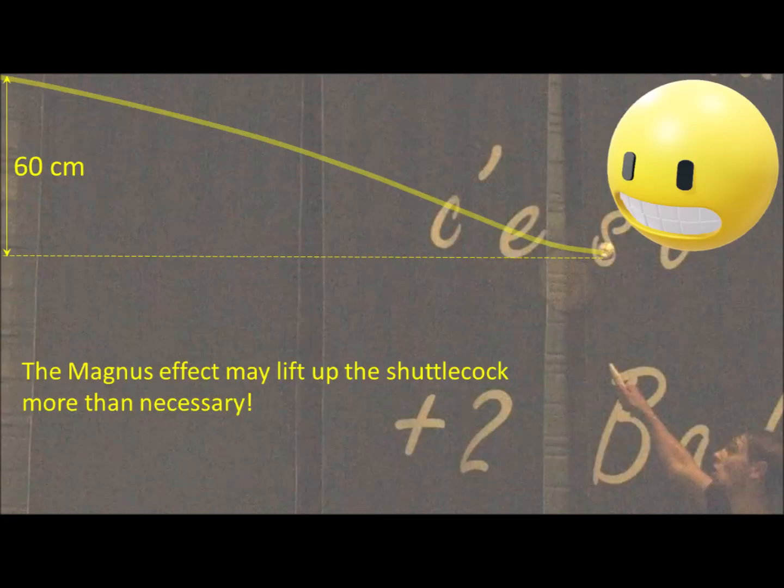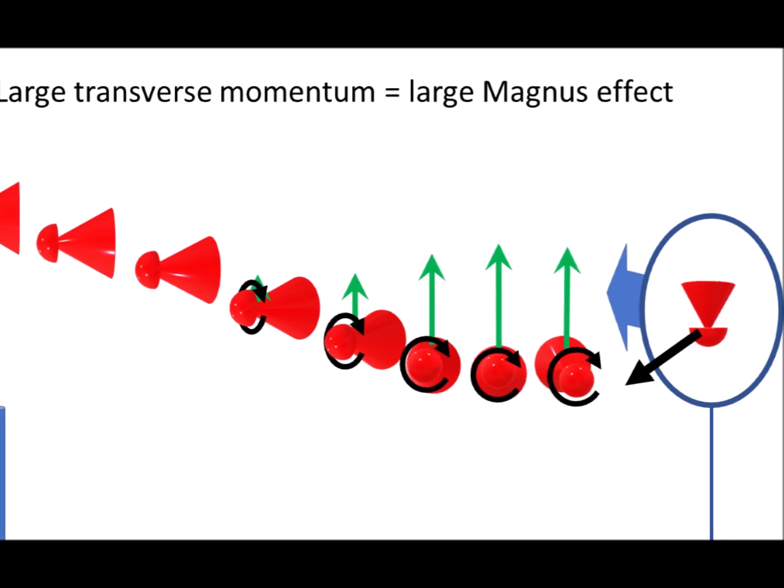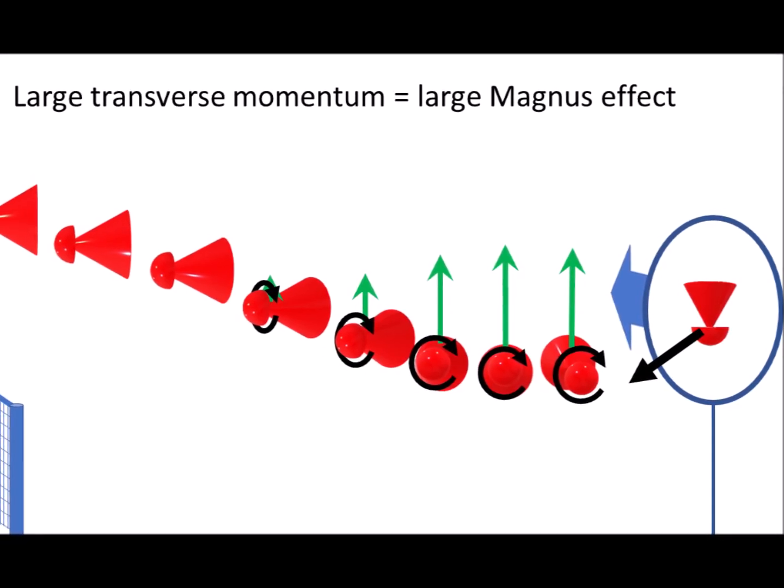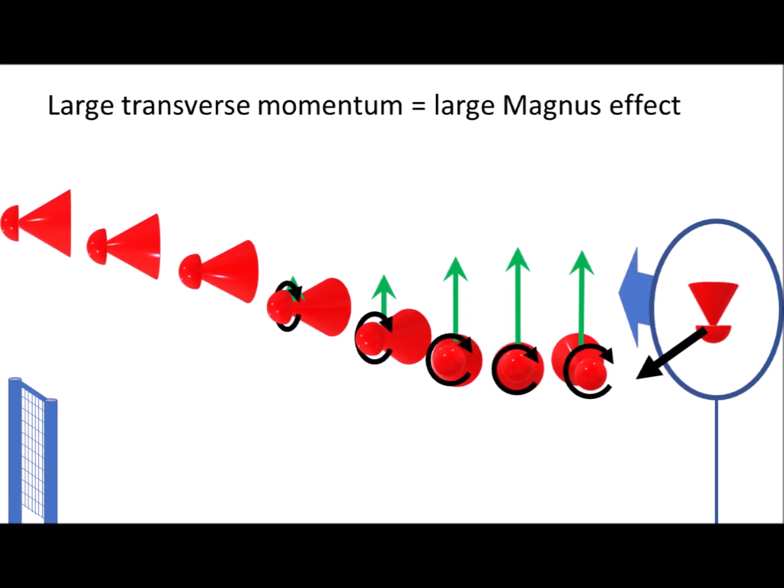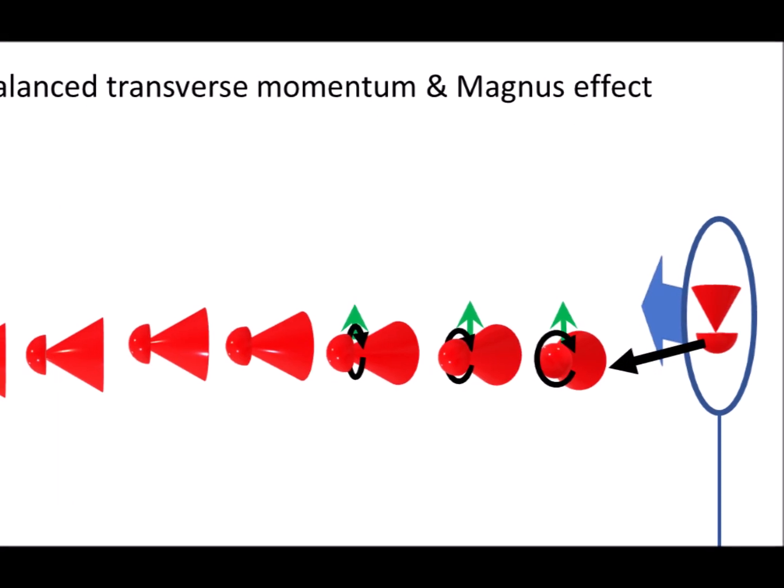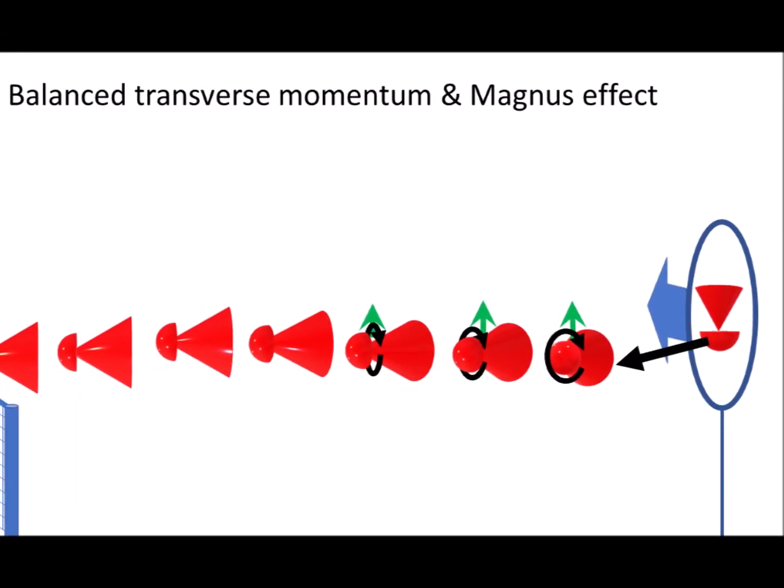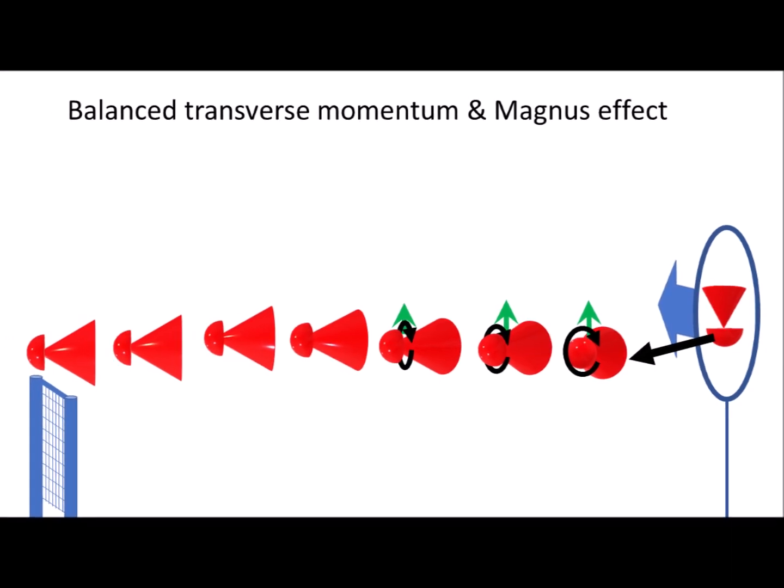Players should take care. Too much Magnus effect can reduce the effectiveness of the slice shot by lifting the shuttlecock more than necessary. This happens when racket impact provides too much transverse momentum and flips the shuttlecock perpendicular to its velocity, which maximizes Magnus effect and therefore shuttlecock lifting. A good balance between slice and transverse momentum allows for a perfect trajectory just above the net.